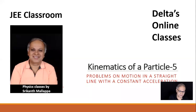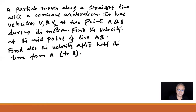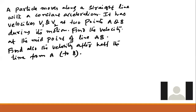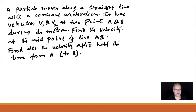A particle moves along a straight line with constant acceleration. It has velocities v1 and v2 at two points A and B during its motion. Find the velocity at the midpoint of line AB, and also find the velocity after half the time from A.